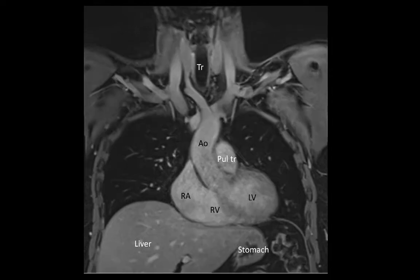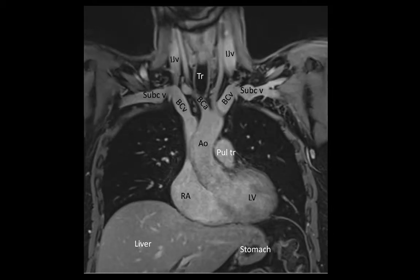The divisions of the major veins of the heart are now in view. Here we see the left and right brachiocephalic veins, which are formed from the internal jugular veins and the subclavian veins at the venous angles. The brachiocephalic trunk is also visible emerging from the arch of the aorta. In this view we can see the left and right common carotid arteries. We can also see the superior vena cava being formed from the right and left brachiocephalic veins.